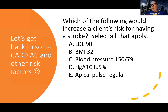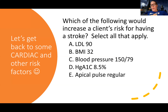Apical pulse regular — that's normal and good, so we wouldn't be concerned. However, if this said apical pulse irregular, I'd be worried about A-fib. An irregular apical pulse can be a sign of atrial fibrillation, and A-fib is a risk factor for stroke. So to summarize risk factors: high cholesterol, obesity, high blood pressure, diabetes, and A-fib are big ones. The correct answers for this question are B, C, and D.